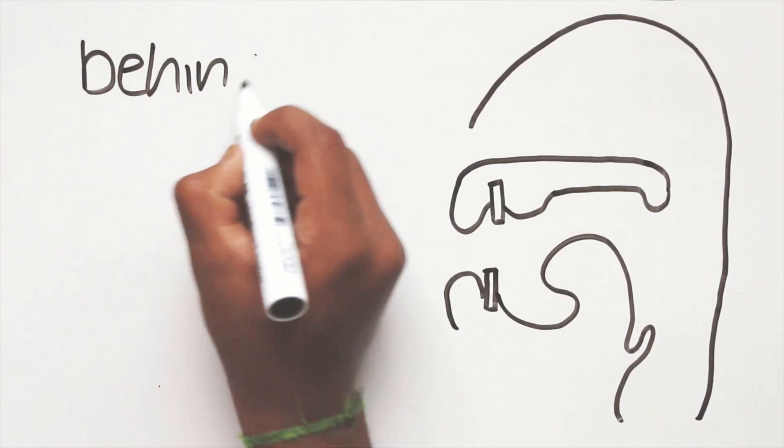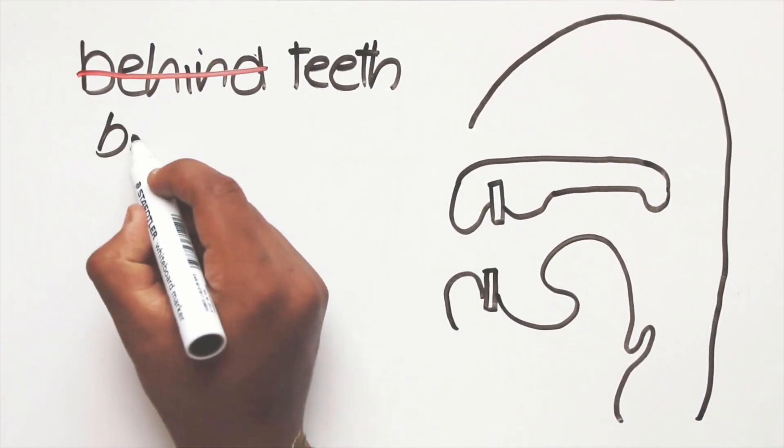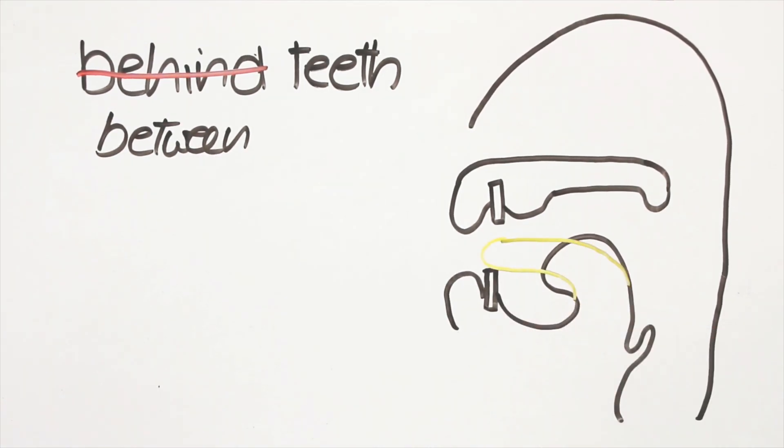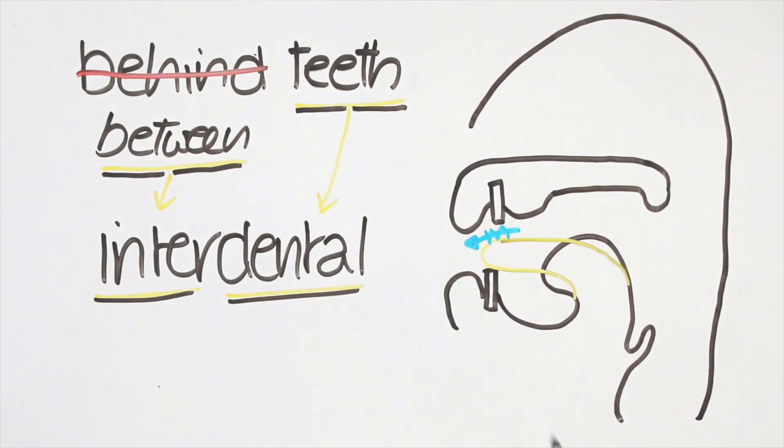Anyway, instead of behind your teeth, stick your tongue between your teeth and blow. The th and th sounds you get are interdental, between teeth. Th is voiced and th is voiceless.